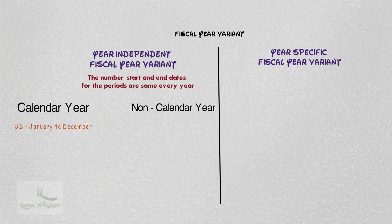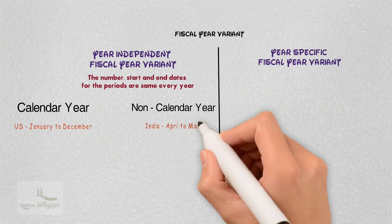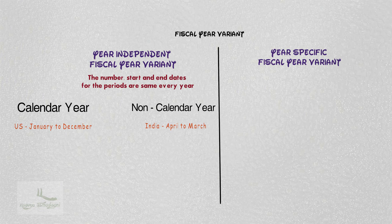Moving on to non-calendar year: in this case the financial year does not follow the January to December pattern. For example, India — it is from April to March. For the financial year 2017 for India, it starts from April 2017 and ends on March 2018. Similarly, for the financial year 2018, it starts from April 2018 and ends on March 2019.